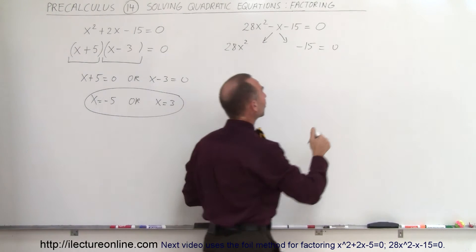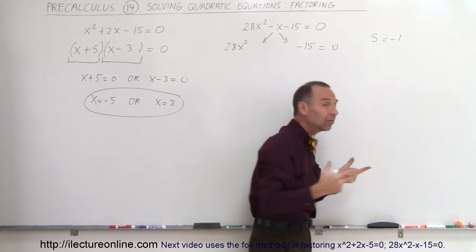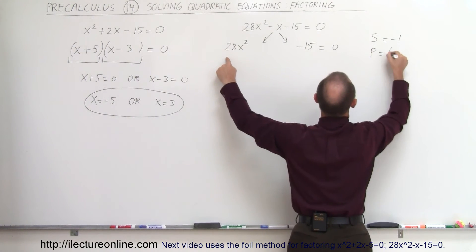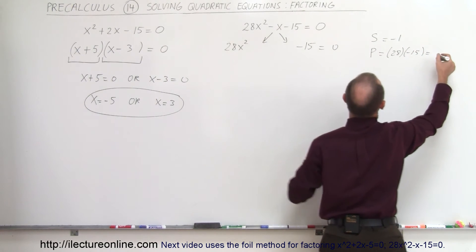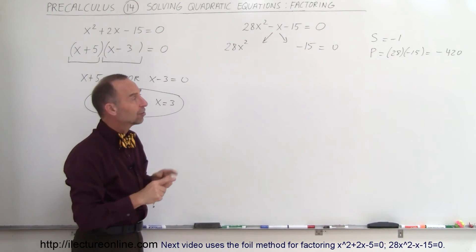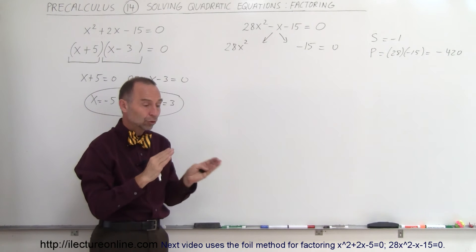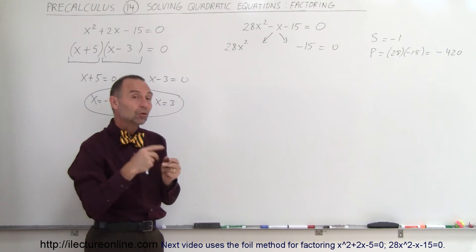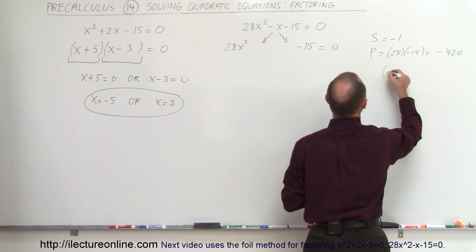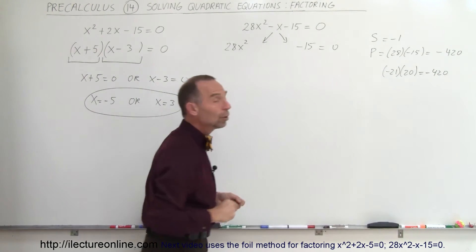To find those two coefficients, the sum must equal negative 1 because when you add them together you should get negative x. The product will equal the product of the outer two numbers: 28 times negative 15, which equals negative 420. So we're looking for two numbers where the product is minus 420 and the sum is minus 1 — meaning one number is one unit bigger than the other and the negative number is larger. Since 21 times 20 is 420, minus 21 and positive 20 are the two numbers.